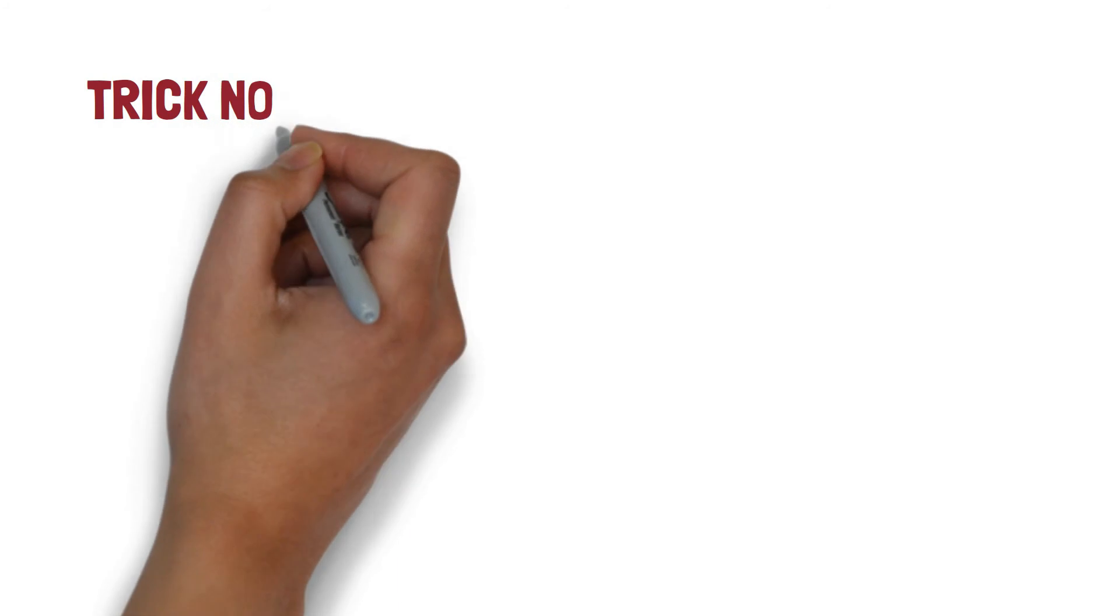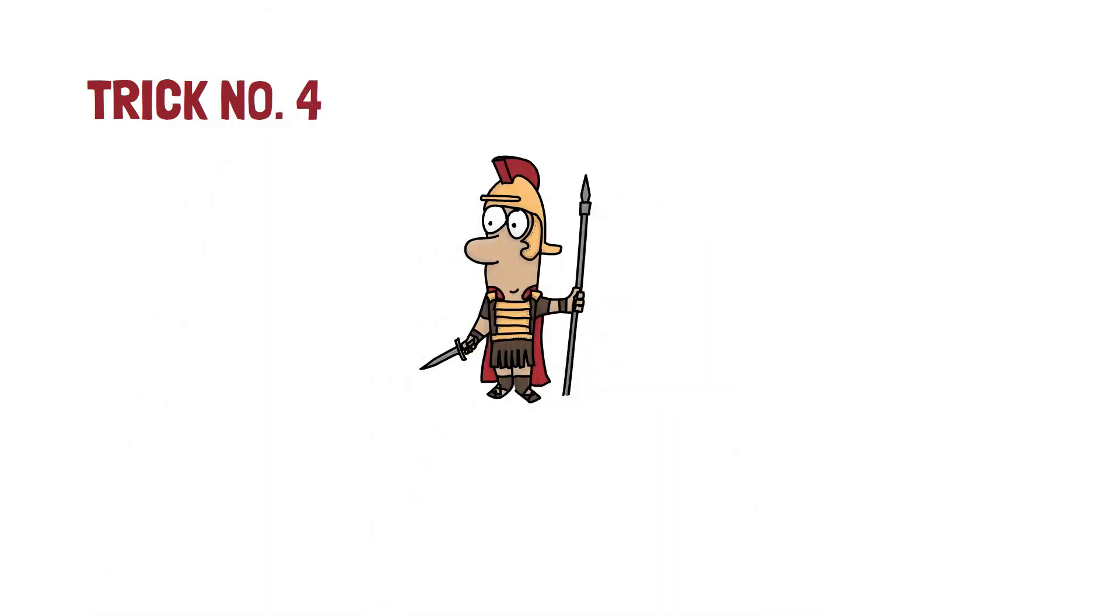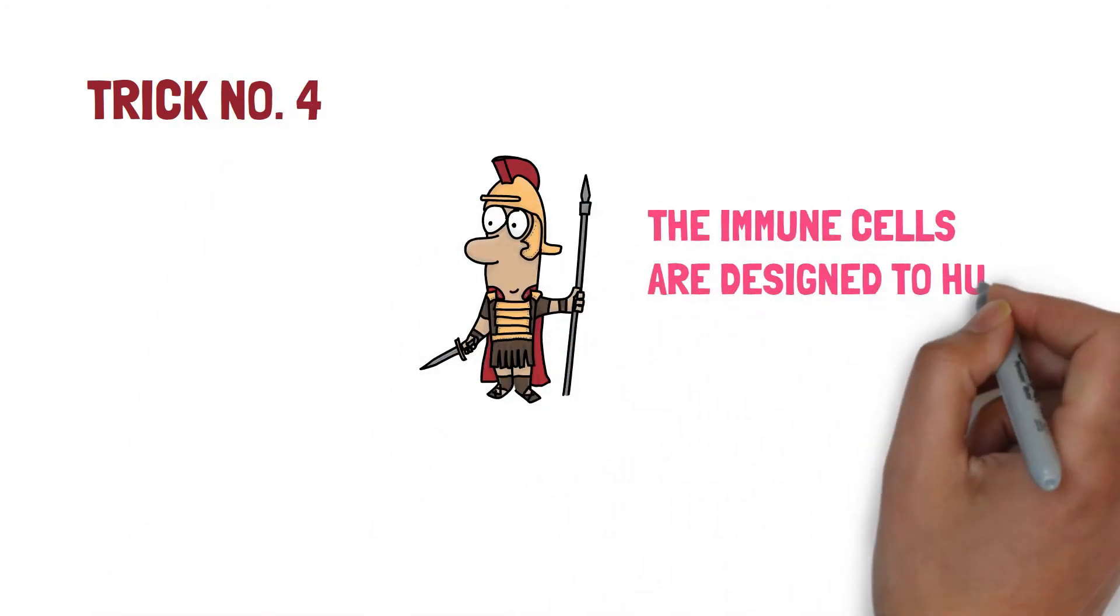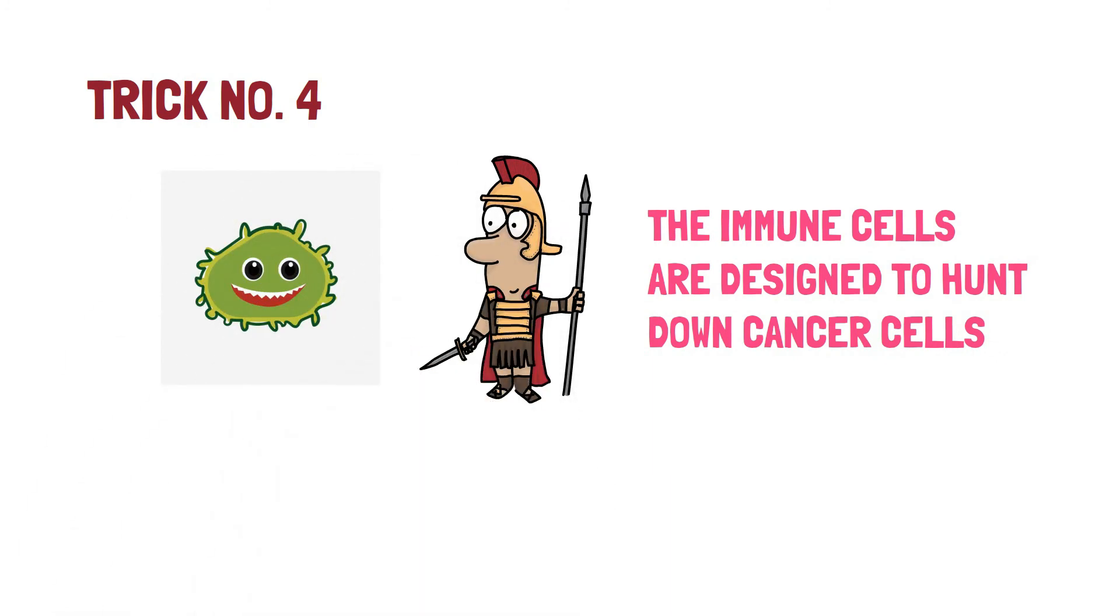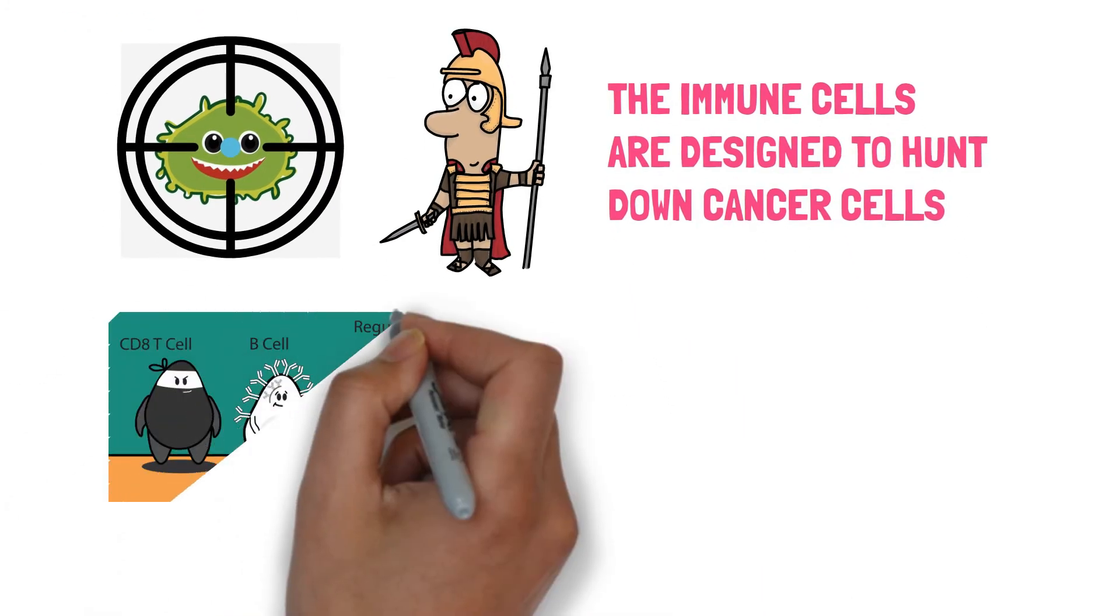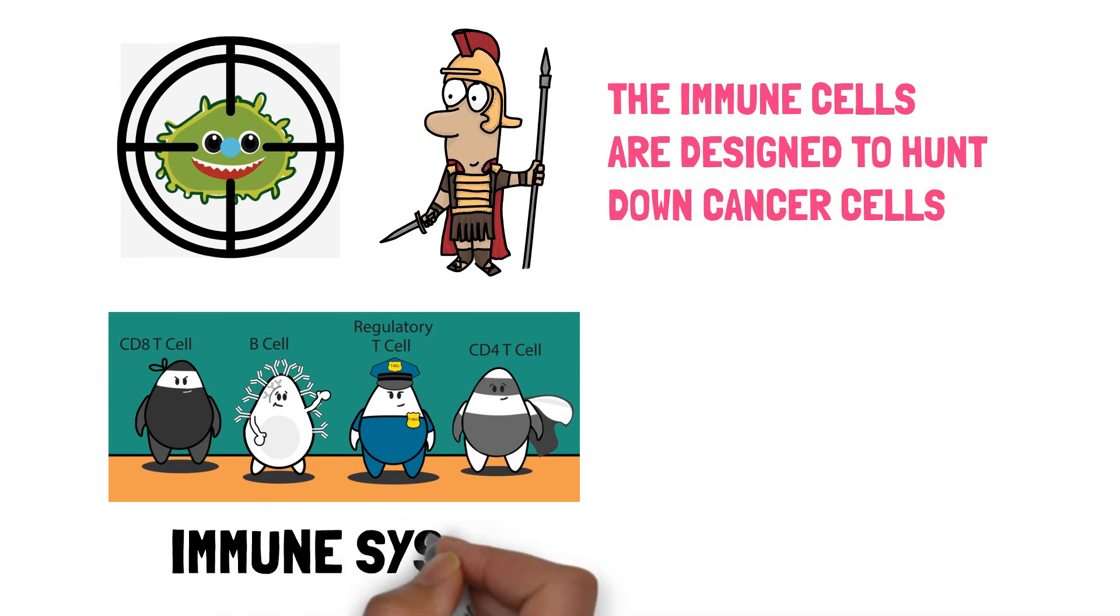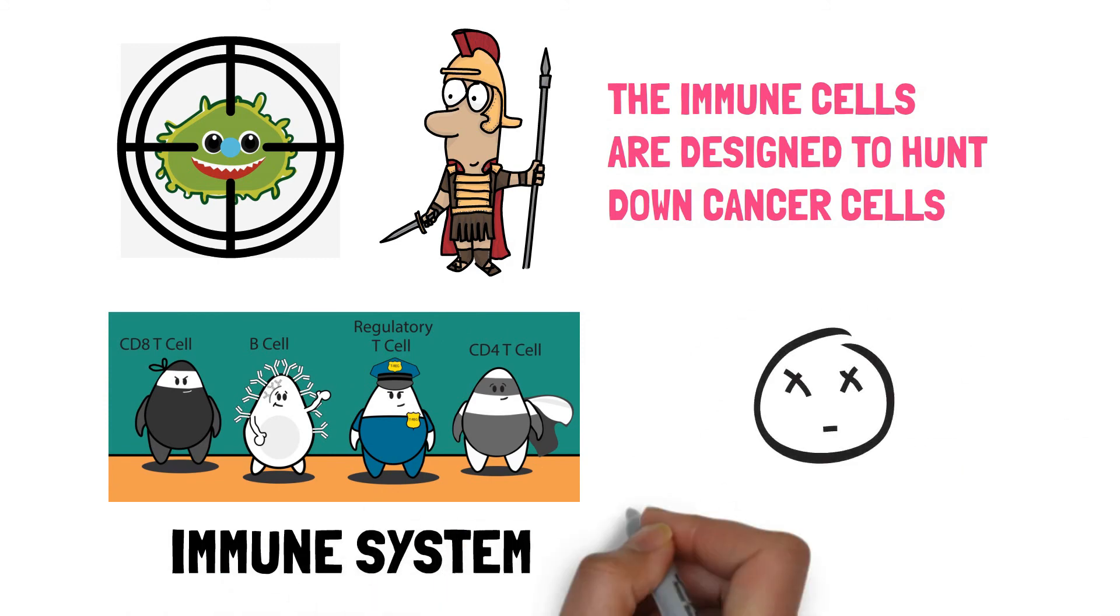The trick number four the cancer cells used to evade the immune system is the immune system is designed to hunt down cancer cells specifically and leaves behind the normal cells unharmed and the immune cells can kill the cancer cells.